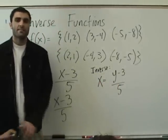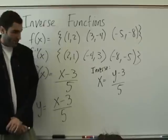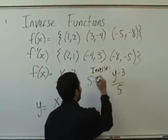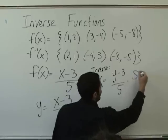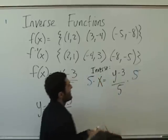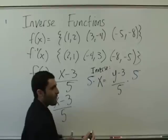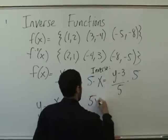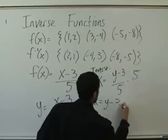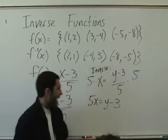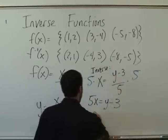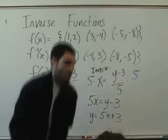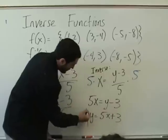So how do we solve for y here? Multiply by 5! Multiply by 5. So what do we get? 5x equals y minus 3. What do we do to both sides? Add 3. So y equals 5x plus 3. This is the inverse function.